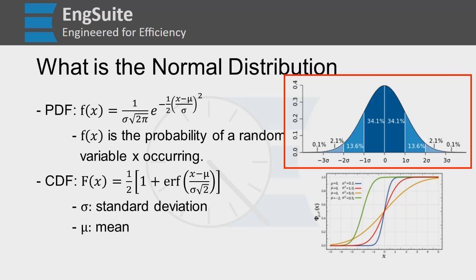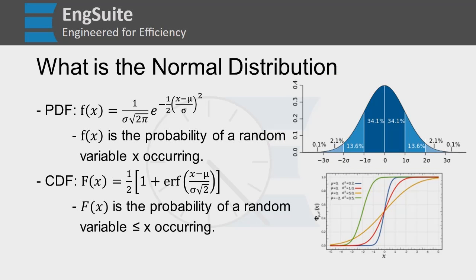So that means the cumulative distribution function, F(x), is actually telling you the probability of you getting a value less than or equal to that value of x.